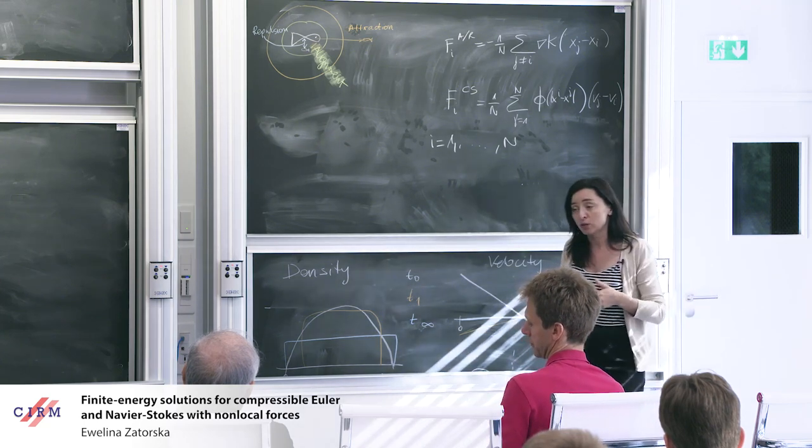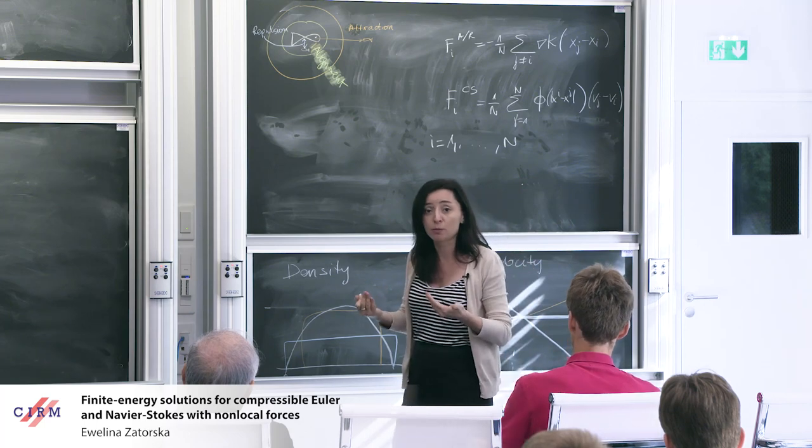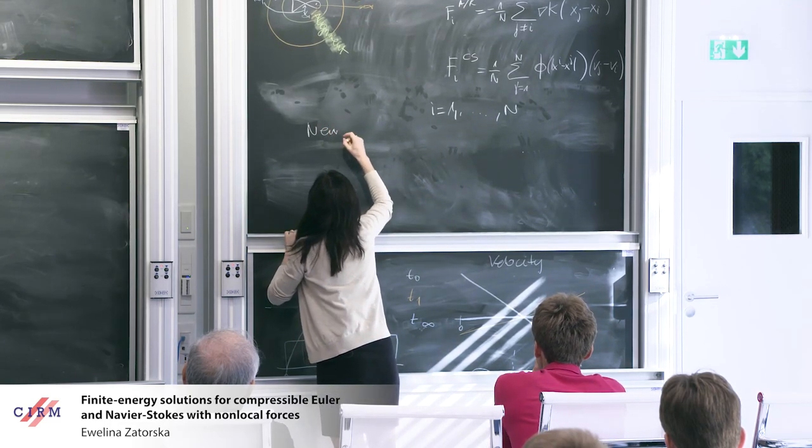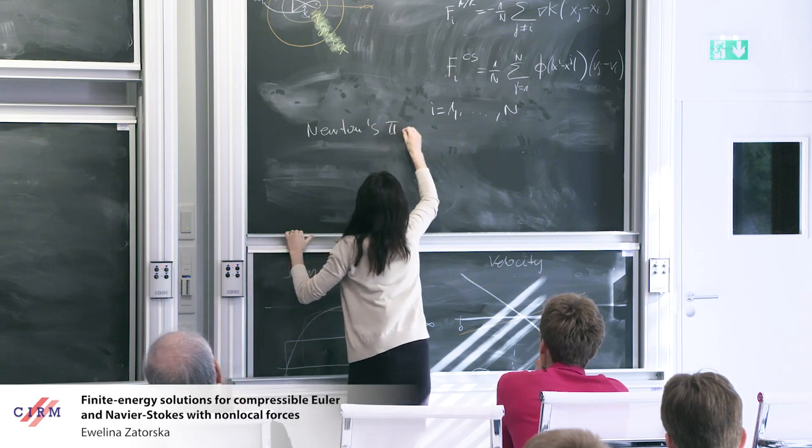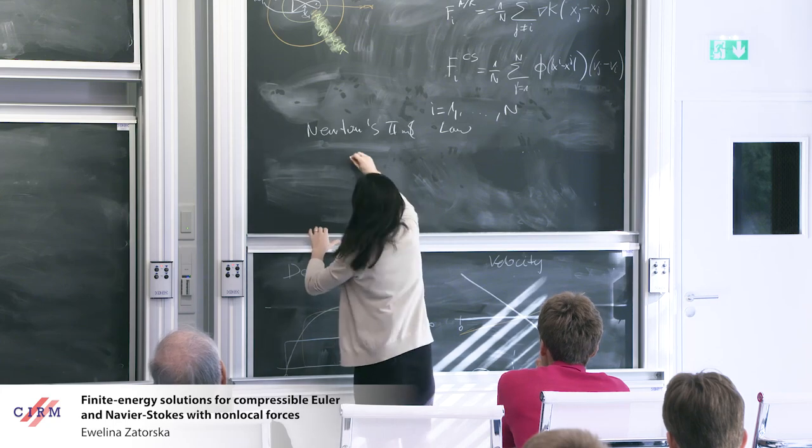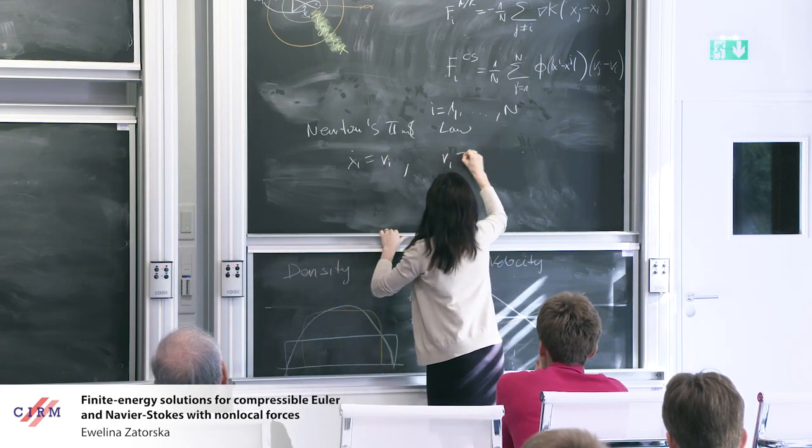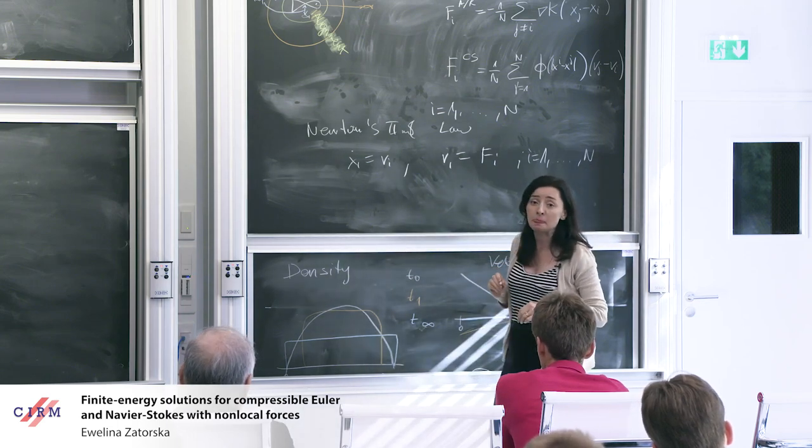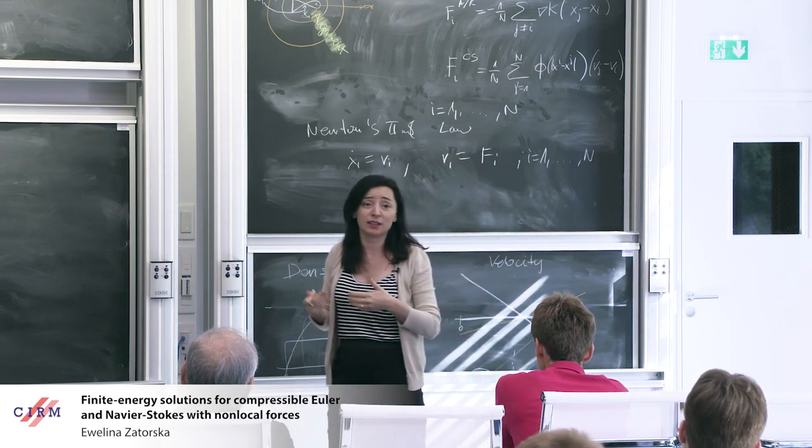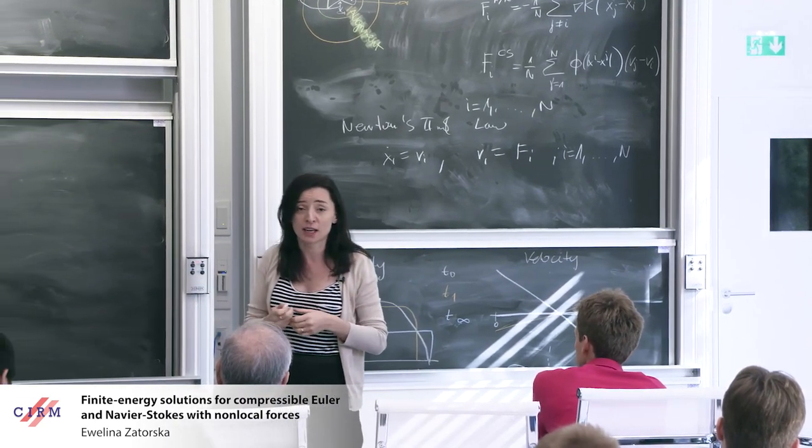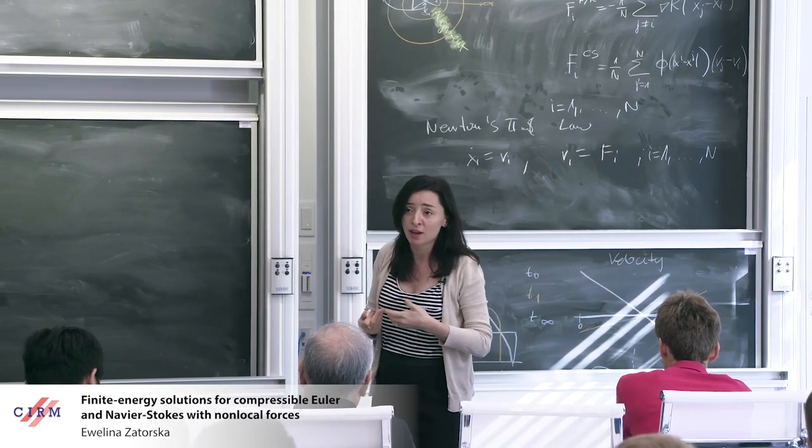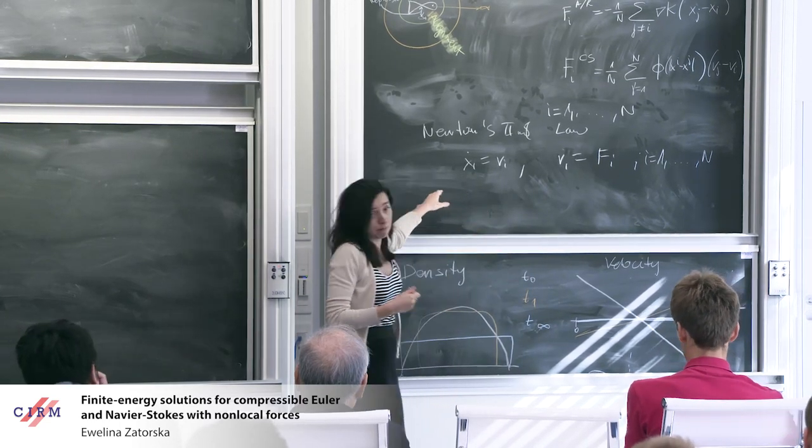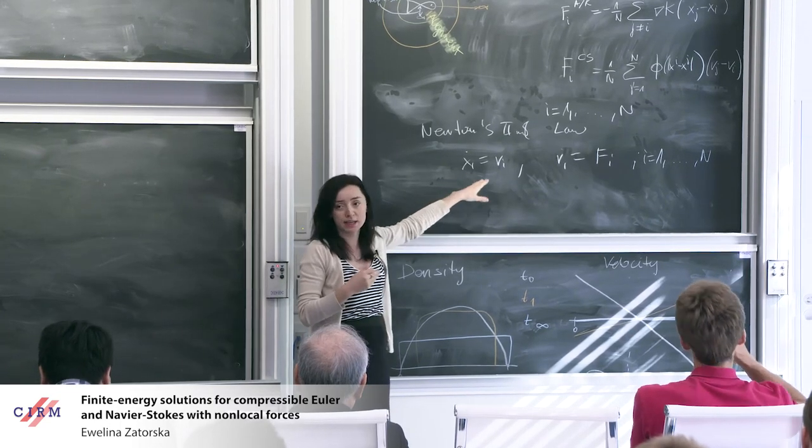And the indexes here stand for Cucker-Smale. So that's a Cucker-Smale force. And it's described by the weight or interaction kernel phi that tells you there is some weight associated to exchange of the velocities between individuals j and i. Okay. So what you do in order to describe the motion of the group of particles, you write, well, the naive approach would be to write Newton second law that allows you to describe precise position and precise velocity of each of your particles.